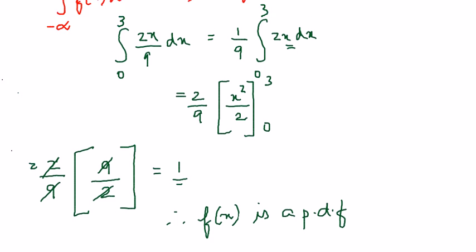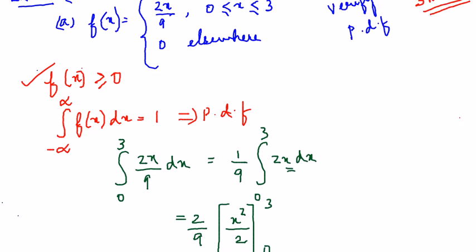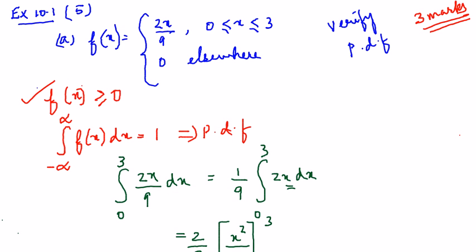Two things that you have to prove: that f of x is greater than or equal to 0 which is very evident from this equation because it's a positive number and for any values of x greater than or equal to 0 it is only going to remain a positive number. It's going to be greater than 0. So the first rule is satisfied and the next rule is between the given limits you integrate f of x that is 2x by 9 here, apply the limits you must get 1. If it is 1 then it is a pdf.